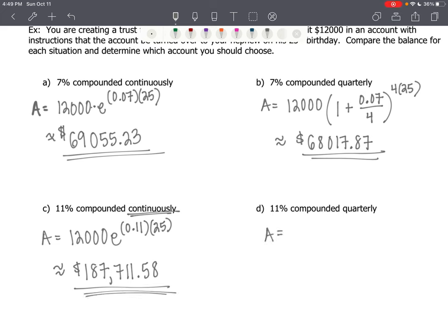But, we need to be able to back it up by comparing it to 11% compounded quarterly. So, that's 12,000 times 1 plus 11% divided by 4 times a year, raised to the 4 times 25 power. That's going to be approximately $180,869.07.